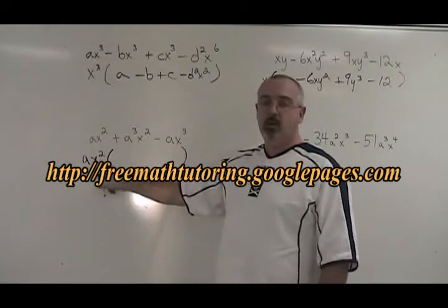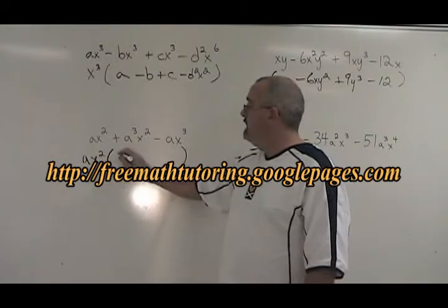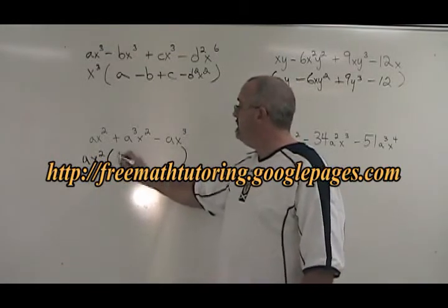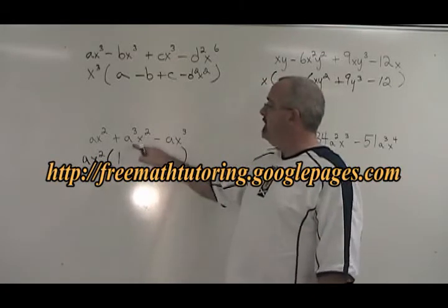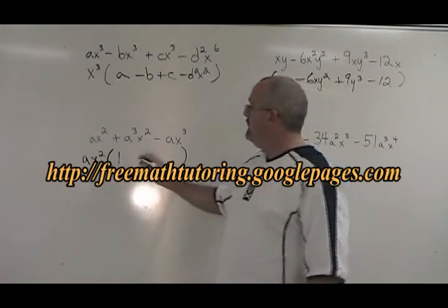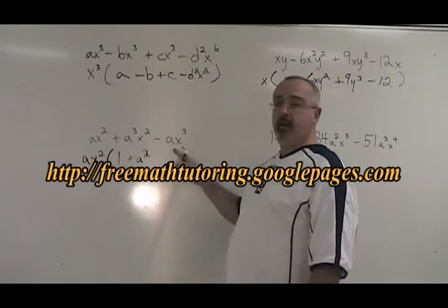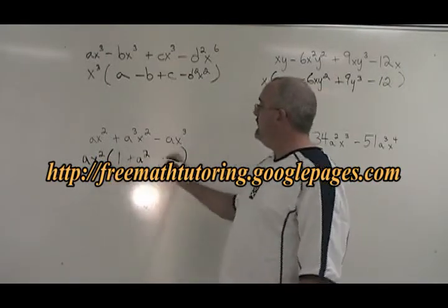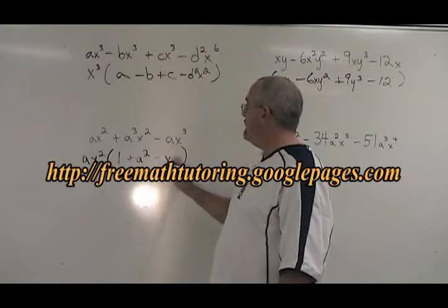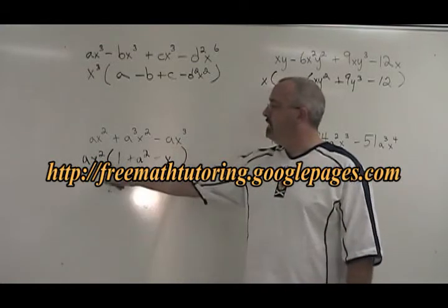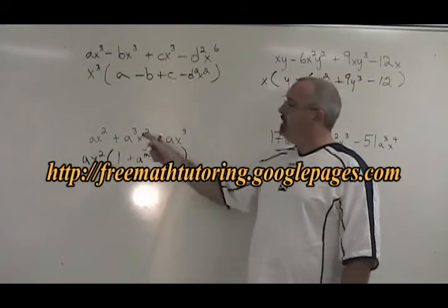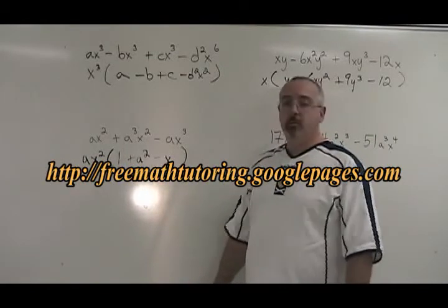AX squared divided by AX squared, remember, is equal to 1. You have to write the 1. A cubed X squared divided by AX squared is equal to A squared. Negative AX cubed divided by AX squared is equal to negative X. If we multiply AX squared by this expression, we get our original question. So we must have done it right.